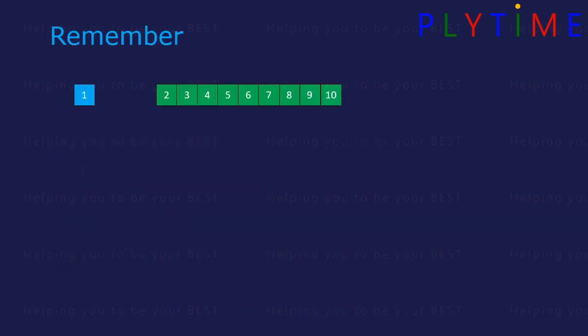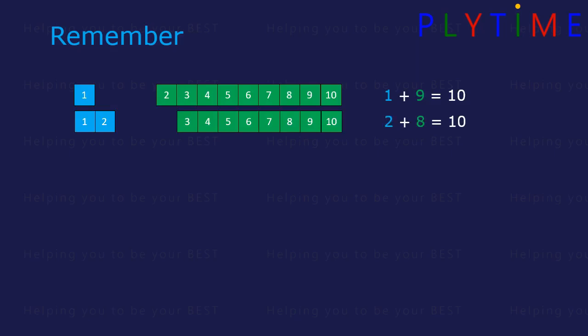Remember, let's look at our number bonds. 1 and 9 is 10. 2 add 8 equals 10. 3 and 7 equals 10.